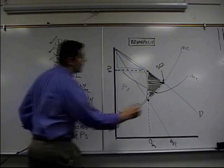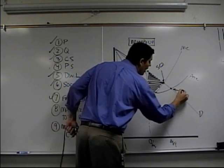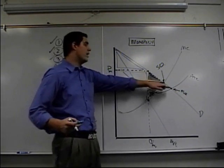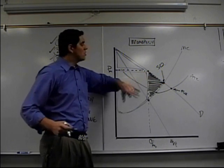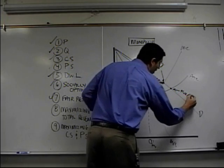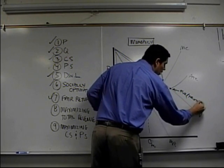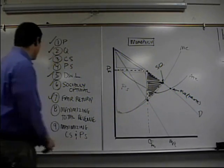Check seven is fair return. Fair return is right here. The reason why is the government comes in and regulates with the price ceiling right here at price equals ATC. Then that firm total revenue is going to equal total cost. Total revenue equals total cost, no economic profit at that point.